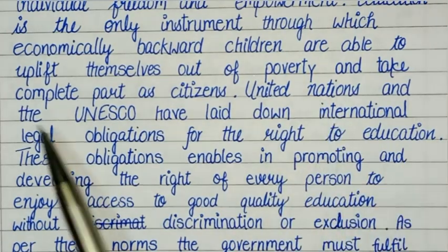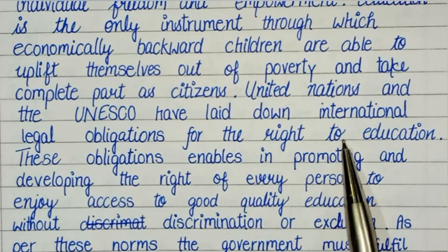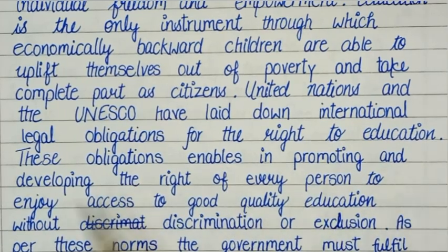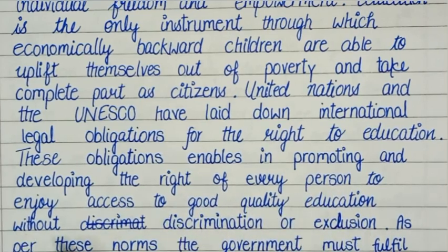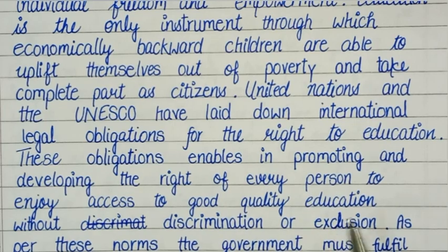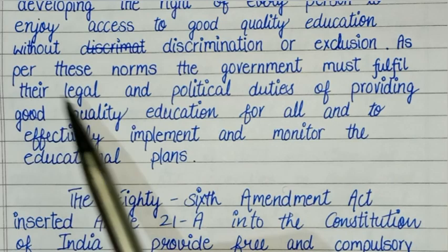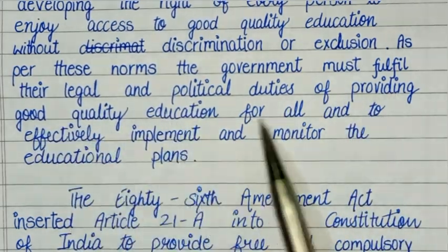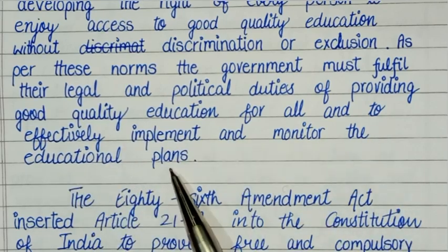The United Nations and UNESCO have laid down international legal obligations for the right to education. These obligations enable promoting and developing the right of every person to enjoy access to good quality education without discrimination or exclusion. As per these norms, the government must fulfil their legal and political duties of providing good quality education for all and effectively implement and monitor educational plans.